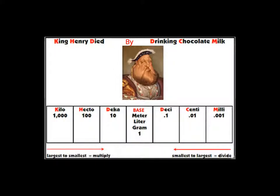And this is how we've modified it a little bit. We have a saying: King Henry died by drinking chocolate milk. That's to help us remember the different units with kilo, hecto, deca, your base, which I'll explain in a minute, deci, centi and milli.